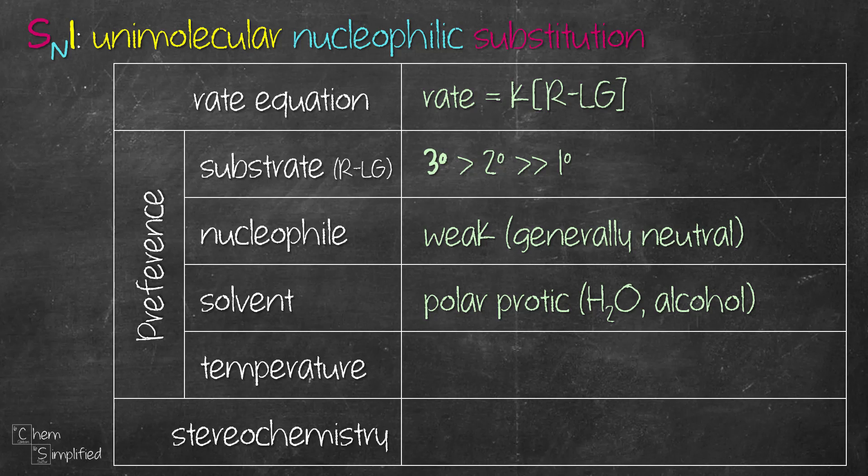Usually the solvent in SN1 also acts as a nucleophile, and that process is known as solvolysis where the nucleophile and solvent are the same. Nucleophilic substitution reactions prefer low temperature in general. If heat is applied, elimination will dominate over nucleophilic substitution. Therefore, to favor SN1 reaction, we want to keep the temperature low.